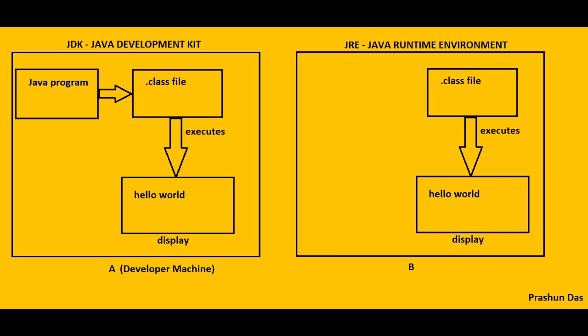So guys, JRE i.e. Java Runtime Environment helps to execute a code and then display the result. Hence, a client machine like B should always contain JRE.